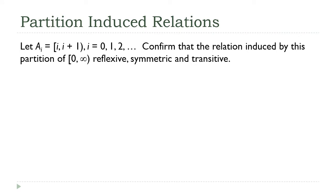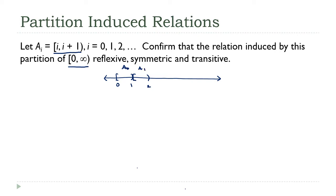Here's a specific example: we have a collection of sets a sub i that form a partition of the positive real numbers. If i is 0, then a sub 0 goes from 0 up to 1, including the left endpoint but not the right. A sub 1 goes from 1 to 2, a sub 2 from 2 to 3, and so on. These sets are mutually disjoint and their union as n goes to infinity is the entire positive real numbers.